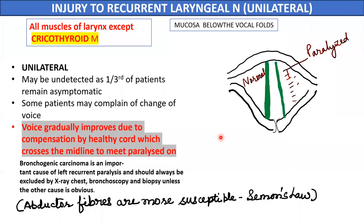Injury to the recurrent laryngeal nerve causes paralysis of all muscles of the larynx except the cricothyroid muscles. Both abductors and adductors are affected, but according to Semon's law, abductor fibers are more involved compared to adductor fibers.